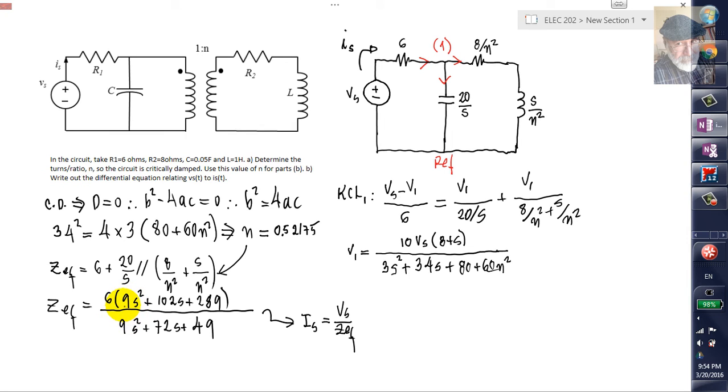And once you have that impedance seen by the source as a function of S, you can divide the voltage source VS by that impedance and get the current in the source in the Laplace domain. Check this out. The roots of the denominator of the current, which of course are going to tell you if the system is critically damped or not, happen to be the roots of the numerator of the impedance.